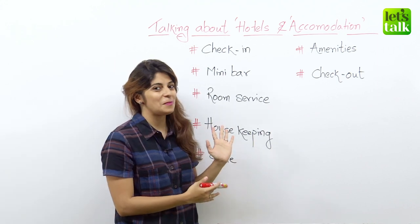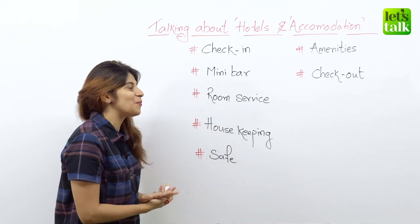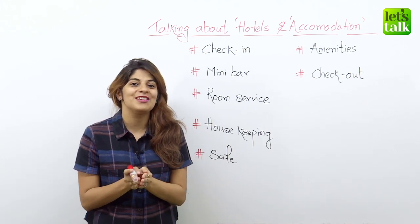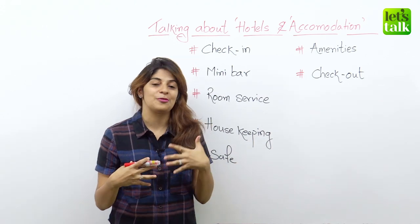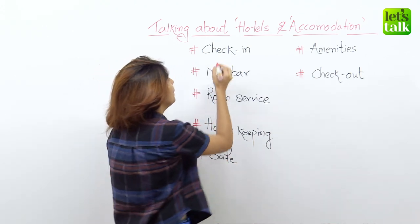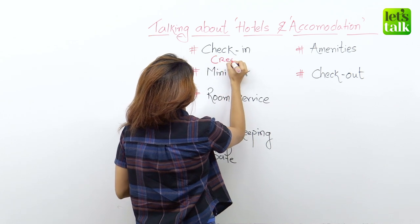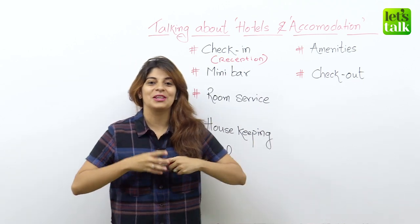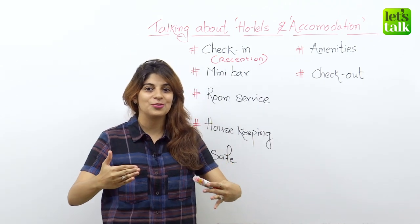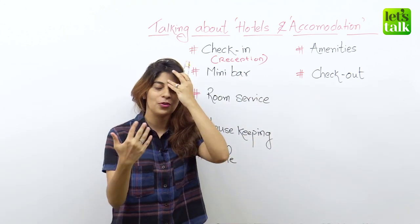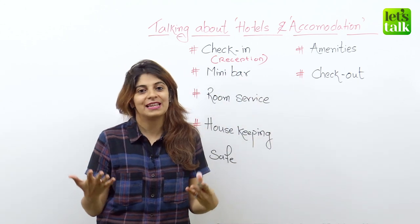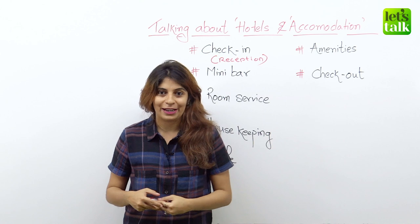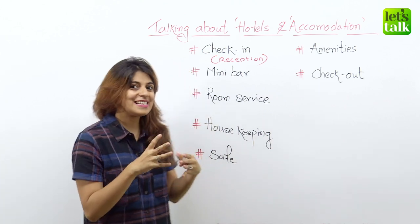Now let's look at some more words helpful for talking about hotels and accommodation. The first one is check-in. The first thing you do when you enter a hotel is walk towards the reception or front desk to check in. So when you enter the hotel, you go to the reception desk and say, 'I have a reservation in the name of Niharika and I would like to check in right now.' So that's the check-in.